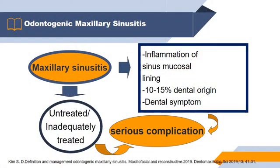Maxillary sinusitis is an inflammation of the sinus mucosal lining. It can arise from non-odontogenic and odontogenic causes. The prevalence of maxillary sinusitis from dental origin is about 10% to 15%. Odontogenic maxillary sinusitis is an inflammatory condition of the paranasal sinus resulting from dental pathology, most often from prior dental alveolar procedures, infection of maxillary dentition, or maxillary dental trauma, which if not treated well can cause serious complications.